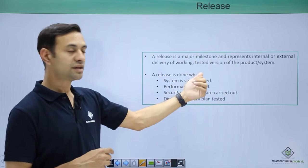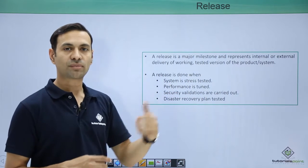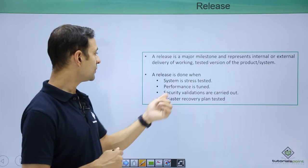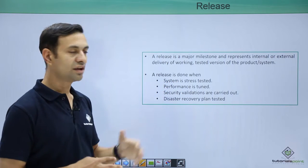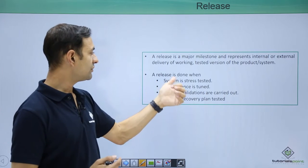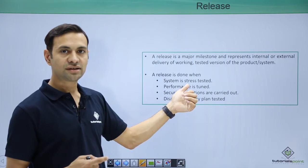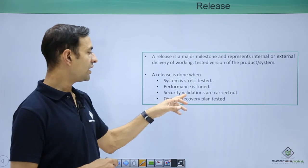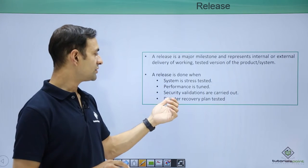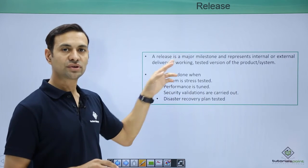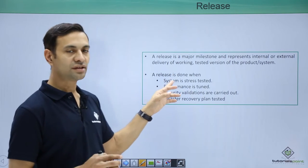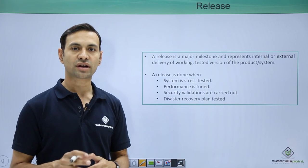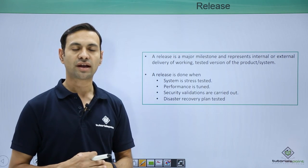A release is a set of iterations, just as an iteration is a set of user stories. Release is a major milestone — it represents internal or external delivery of a working, testable version of the product that a client will use directly in production. Release is done when the system is stress tested to handle multiple users, performance is tuned, security validations are carried out, and the disaster recovery plan is tested. Once this is done, we can tell the client the product is ready to deploy in production.